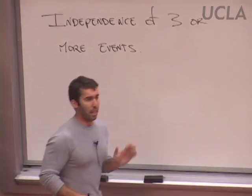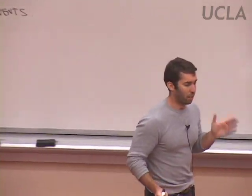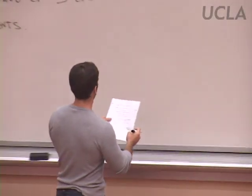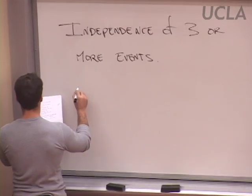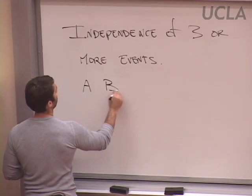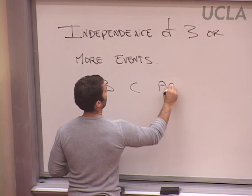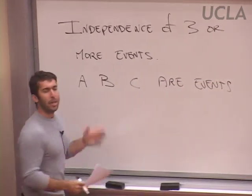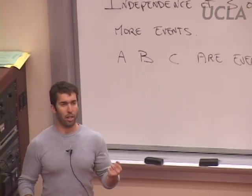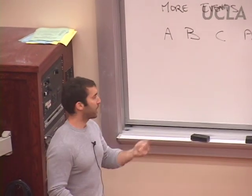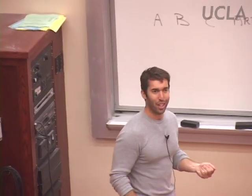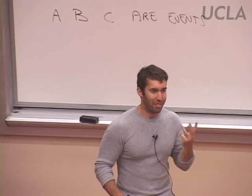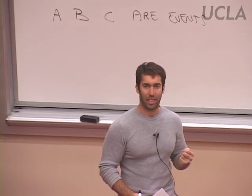Let's look at an example. If I have events A, B, and C, and A and B are independent, and B and C are independent, and A and C are independent — are all three events somehow independent? Yes or no?